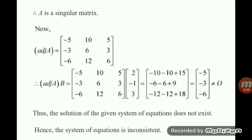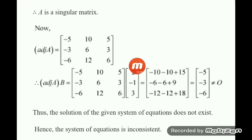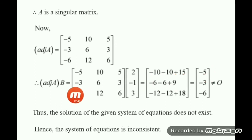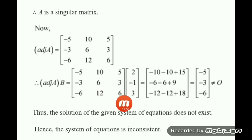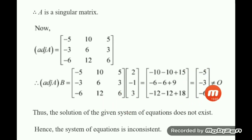Multiply the adjoint of A with B, where B is the column matrix 2, minus 1, 3. First element: minus 10 minus 10 plus 15 equals minus 5. Second element: minus 6 minus 6 plus 9. Third element: minus 12 minus 12 plus 18. The result is not equal to the zero matrix, so the system is inconsistent.